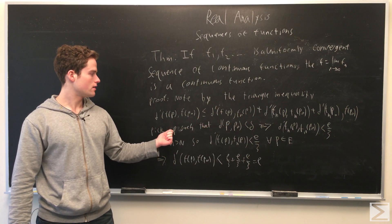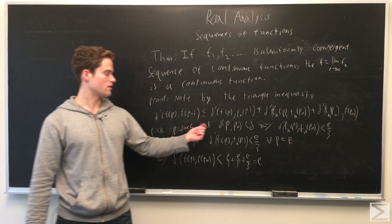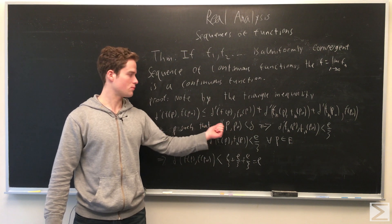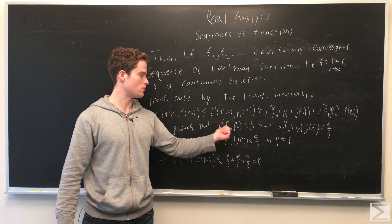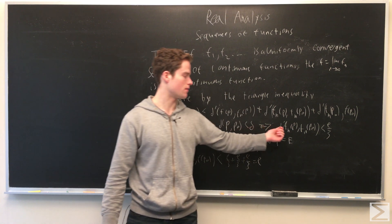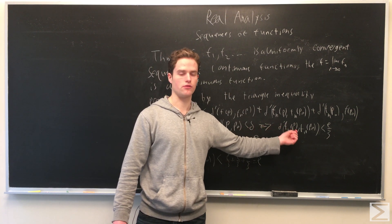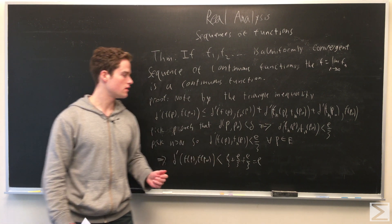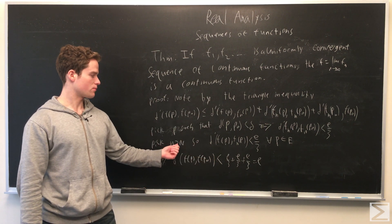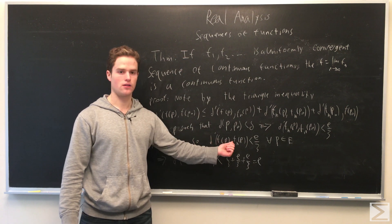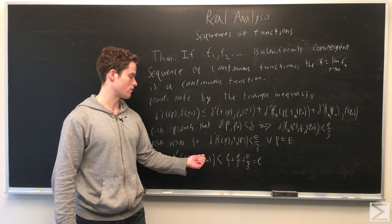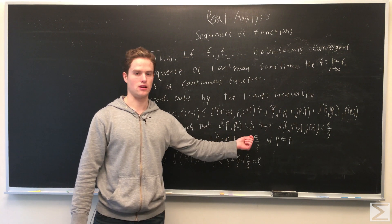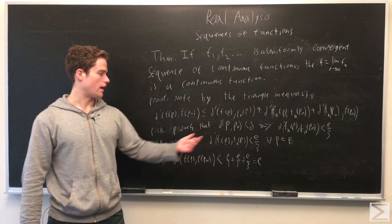Specifically, we pick p such that p is close enough to p_0, with distance from p to p_0 less than delta, so the distance from f_n(p) to f_n(p_0) is less than epsilon over 3. We pick n greater than N so the distance between f(p) and f_n(p), and f(p_0) and f_n(p_0), is less than epsilon over 3.